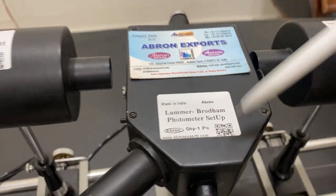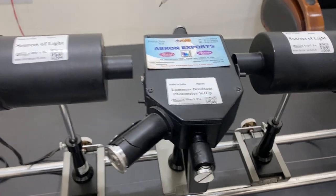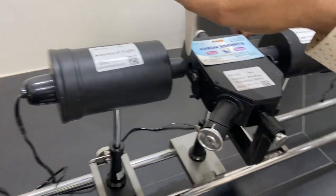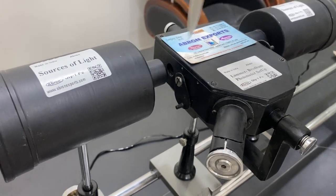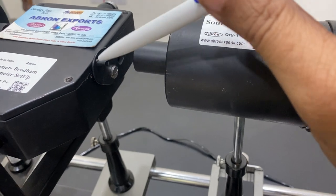This center part is a Lummer-Brodhun Photometer Setup. This is an eyepiece and it has two openings. One on this side with a window that opens, another is on the other side. This one is for the light source and closable.